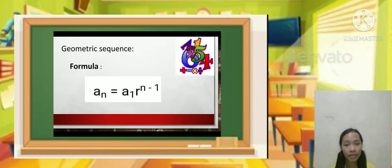Geometric sequence formula is a sub n equals a sub 1 times r raised to n minus 1. How do we determine the nth term? We use this formula.